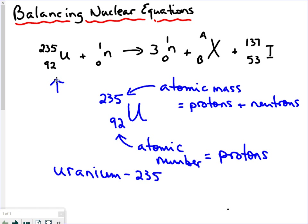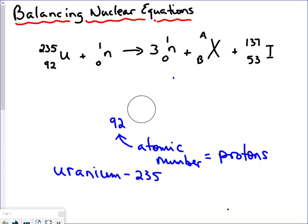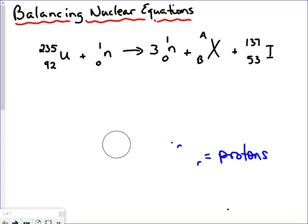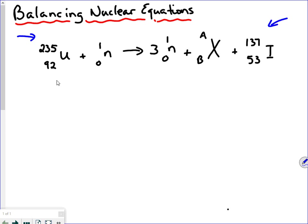We're going to use that type of notation in this nuclear reaction. The key to balancing a nuclear reaction is to make sure that all the atomic masses on one side of the arrow equal all the atomic masses on the other side of the arrow. In other words, the cumulative atomic mass of all of the reactants on this side of the reaction is equal to the atomic mass of all of the products on this side.